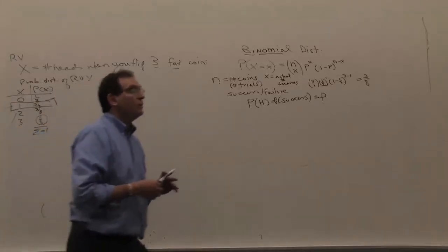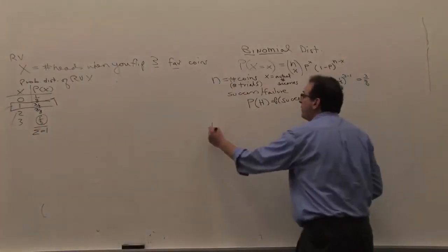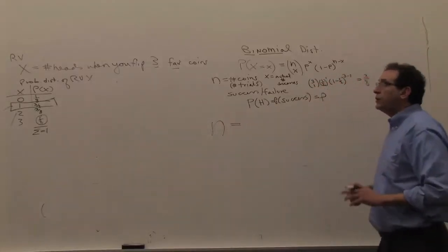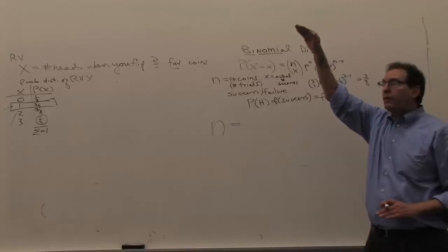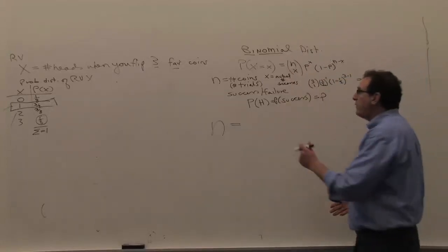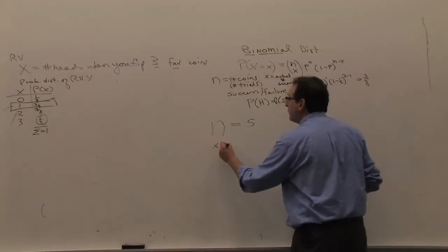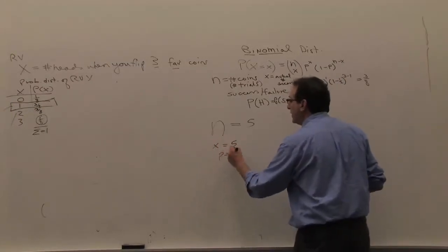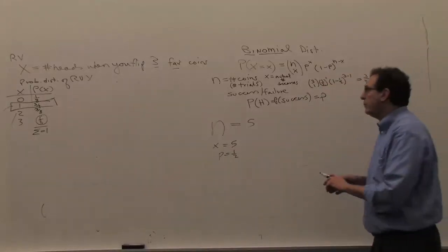You can think of this example as flipping five coins, and what's the chance of getting the stock going up five days in a row? That's similar to getting five heads in a row. So we're having five coins, the number of successes should be five, and the chance of a success is equal to a half, because the book tells us it's 50-50, which is also not necessarily true.